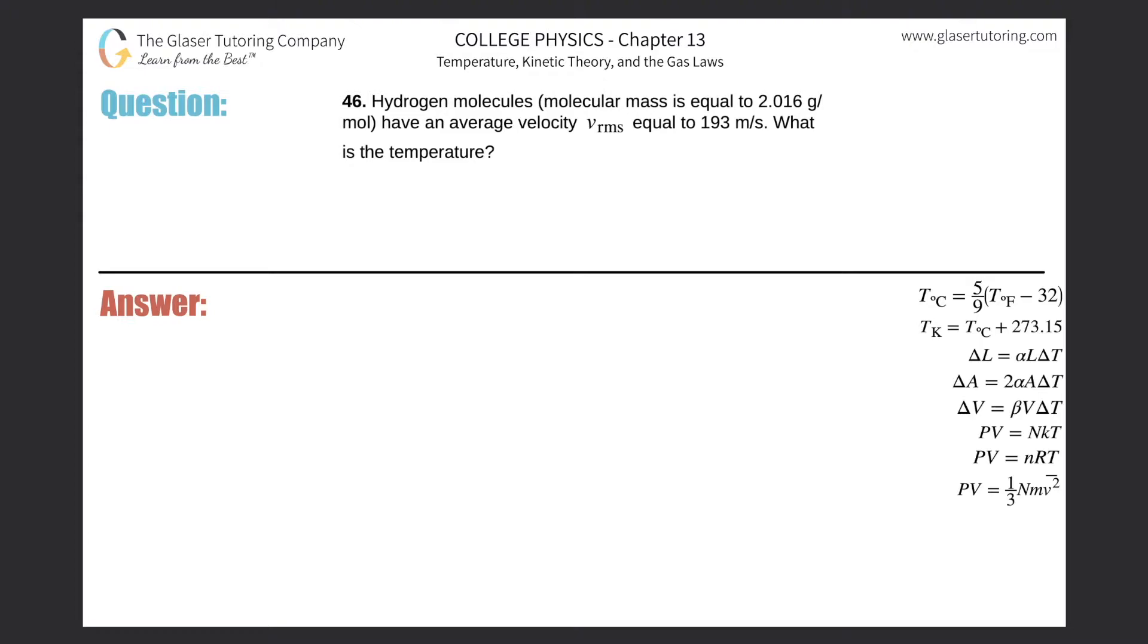Problem number 46: Hydrogen molecules of molecular mass equal to 2.016 grams per mole have an average velocity or root mean square velocity equal to 193 meters per second. What is the temperature?